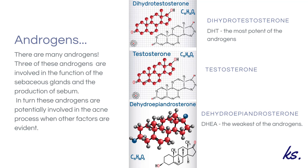The three androgens are: dihydrotestosterone, or DHT, the most potent of all the androgens; testosterone, probably the one you'll be most familiar with; and finally, dehydroepiandrosterone, the weakest of the androgens and the hardest one to say, also known as DHEA.